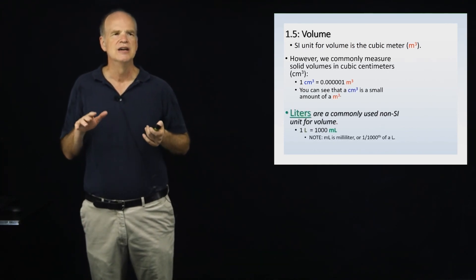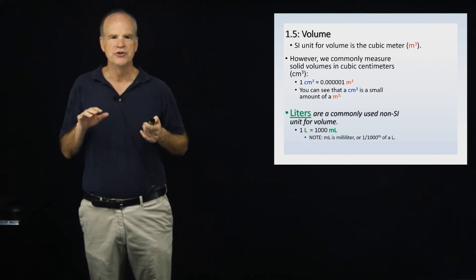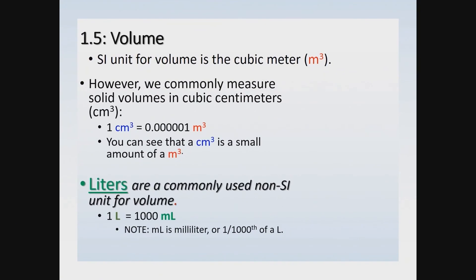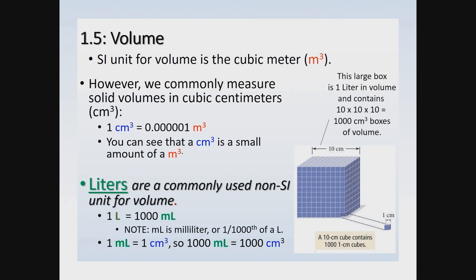In chemistry we also commonly use liters to describe volume, though liters are a non-SI unit. We need to connect liters to the SI world of cubic centimeters or cubic meters. One liter equals one thousand milliliters, where one milliliter is one-thousandth of a liter. It has been defined that one milliliter equals one cm³, which means one thousand milliliters equals one thousand cm³.